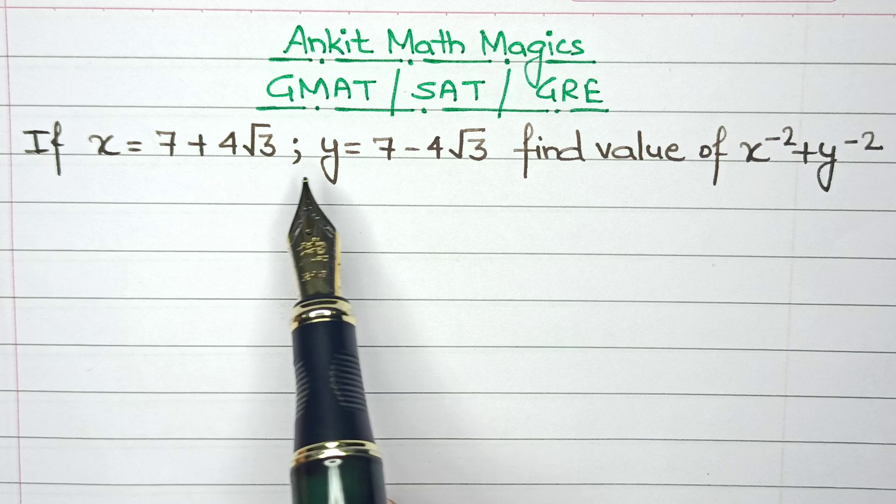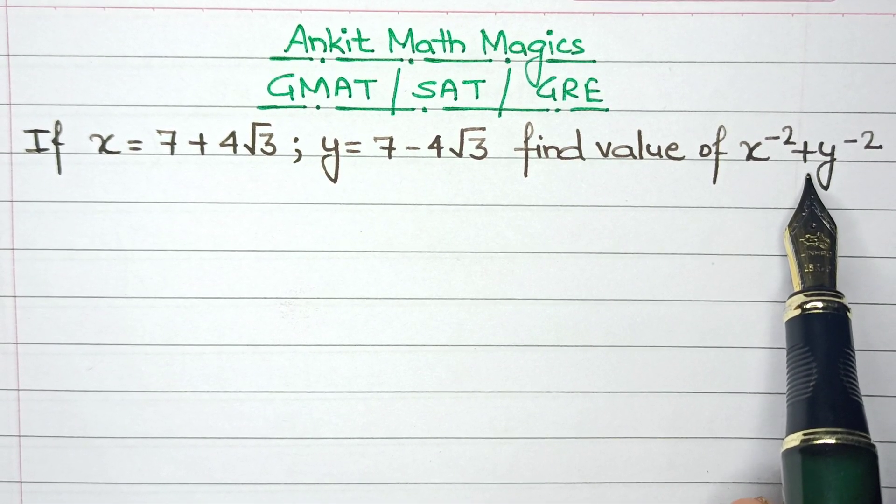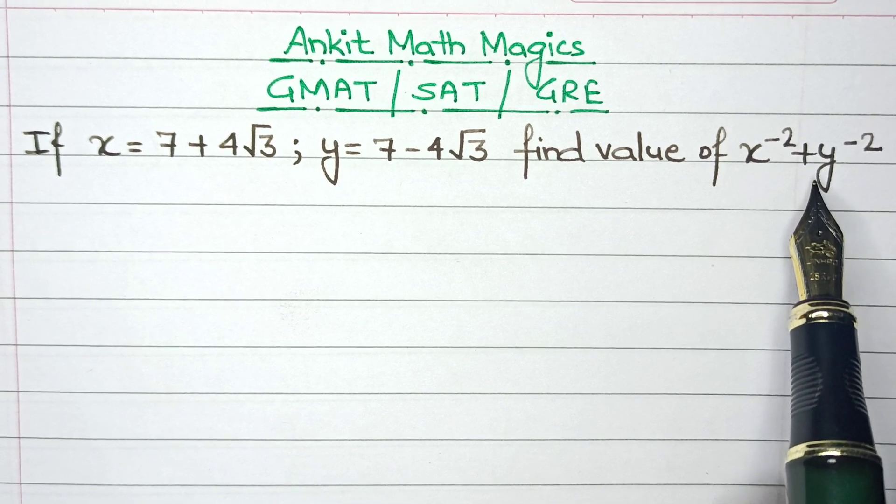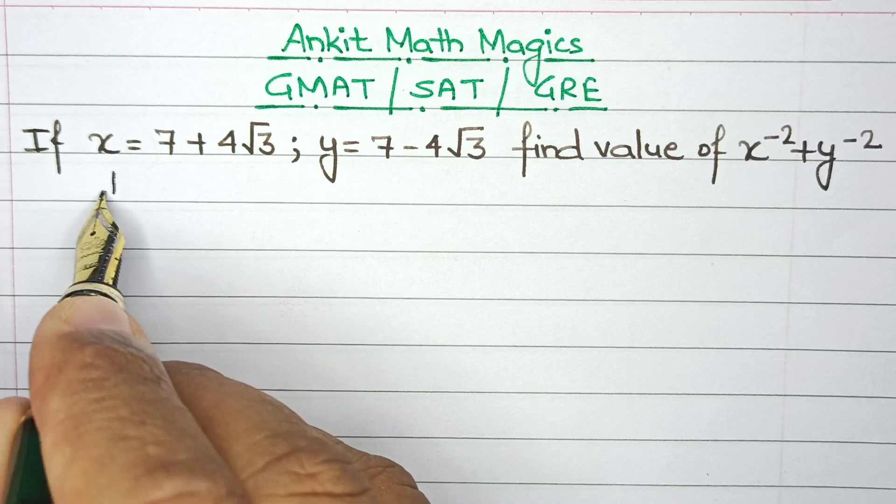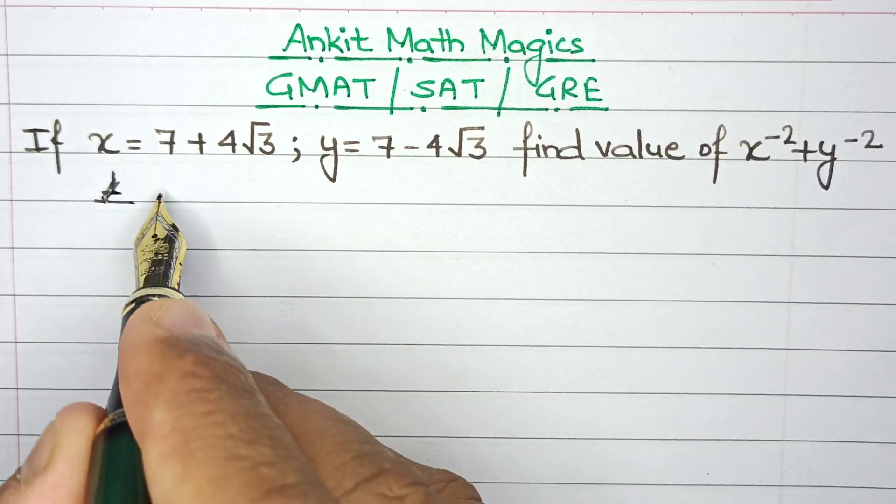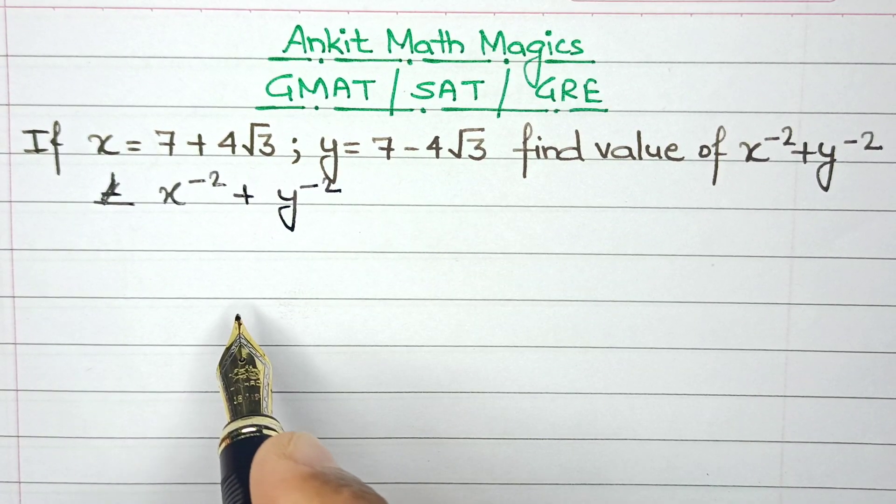Now the thing is, if we directly substitute the values of x and y in this part, then it would be a really daunting task to arrive at the final answer. So before solving this, let's write down this function as x raised to the power minus 2 plus y raised to the power of minus 2.